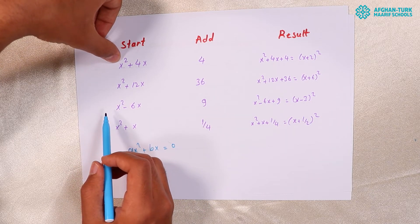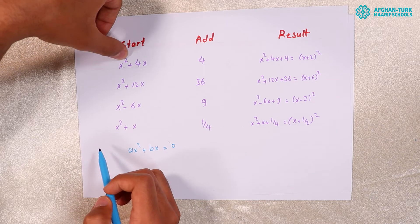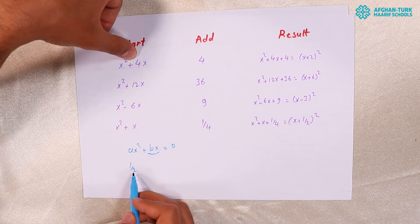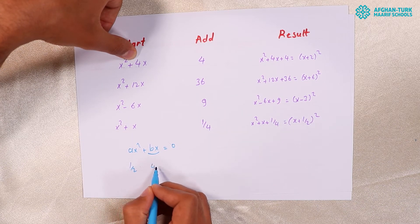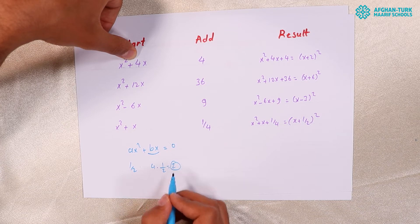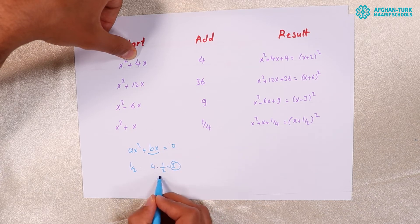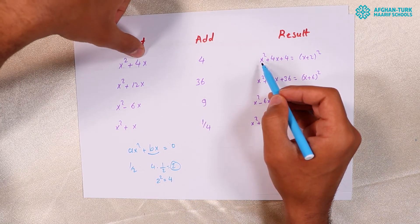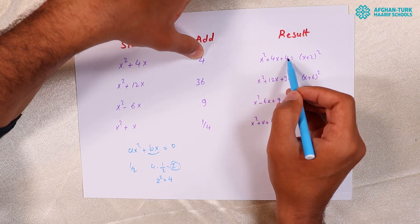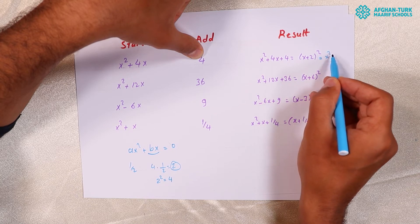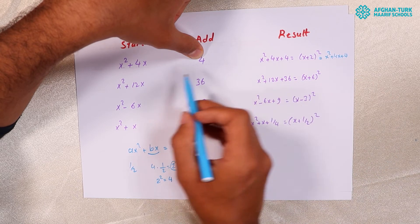First, check if the coefficient is 1 — yes, the coefficient is 1. We divide the 4X term by 2: 4 times one-half equals 2. Then we square it: 2 to the power of 2 equals 4. We add 4 to both sides of the equation. So X squared plus 4X plus 4 gives us the perfect square X plus 2 to the power of 2, which expands to X squared plus 4X plus 4.